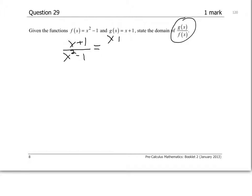So this is a domain question, so all we're really concerned with is stating the non-permissible values and using those to find the domain. So this is a difference of squares. Squared is x minus 1 times x plus 1.